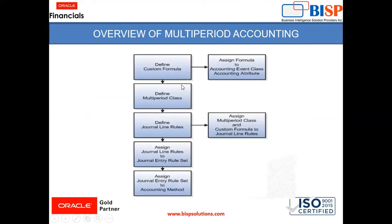Here are the implementation steps to follow in Fusion Accounting Hub. As already seen, you can define custom formulas, define multi-period class, and define journal line rules. These journal line rules are assigned to the journal entry rule set, which is then assigned to the accounting method. When defining a journal line rule, you need to assign a multi-period class and custom formulas to journal line rules. The multi-period accounting feature is available while creating journal line rules in Fusion Accounting Hub. Now we will go to the instance to see how accrual reversal and multi-period accounting are handled.